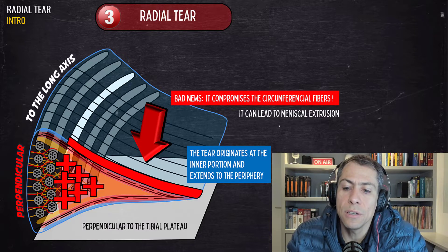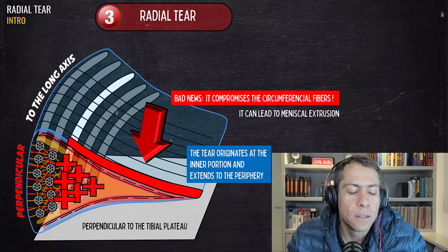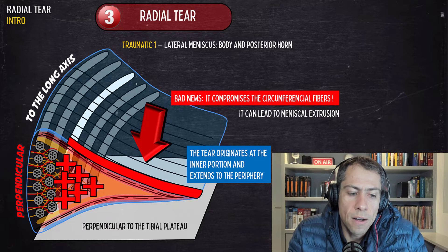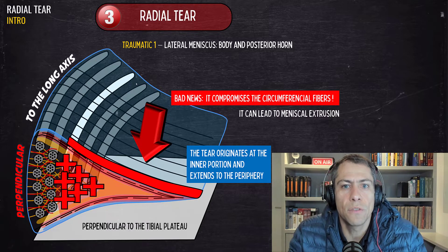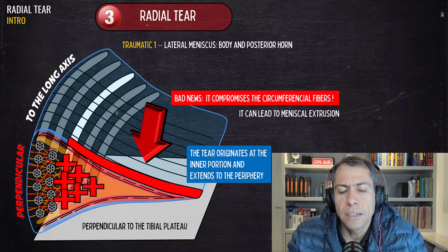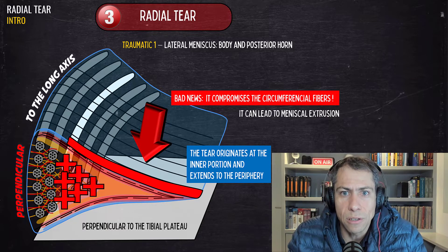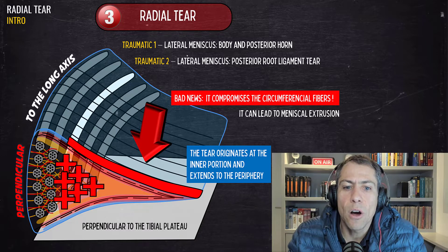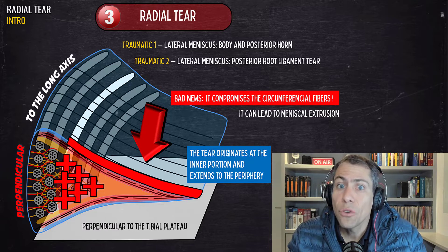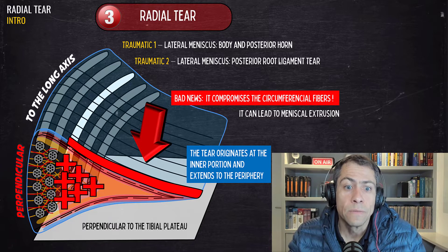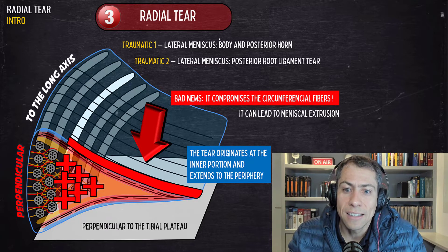This can lead to meniscal extrusion and meniscal insufficiency. There are specific situations and locations where radial meniscal tears commonly occur. One scenario is a traumatic lesion at the lateral meniscus — a radial tear in the meniscal body and the posterior horn of the lateral meniscus. Another traumatic scenario is a posterior root ligament tear of the lateral meniscus, which is associated with ACL tears. Always look for a radial tear in the lateral meniscus in cases of ACL tears.